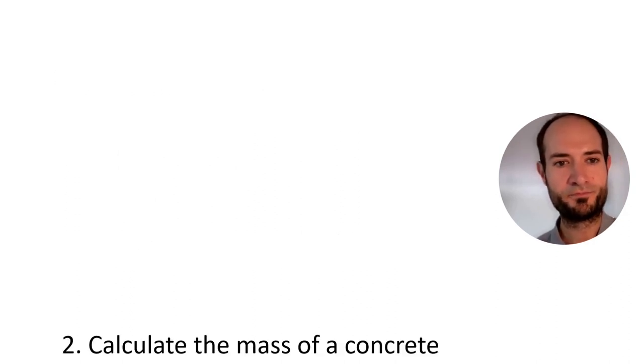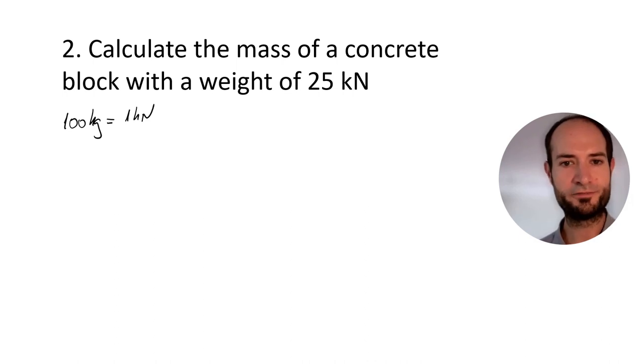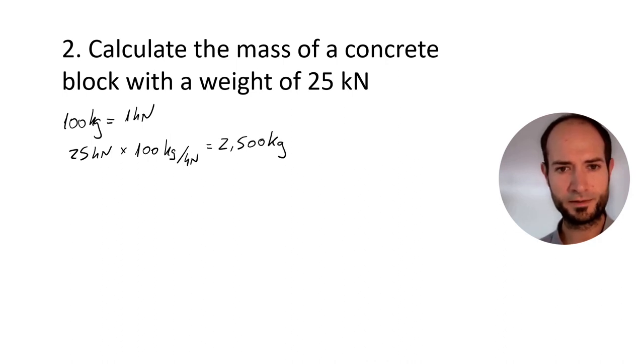Let's go to the second exercise. Calculate the mass of a concrete block with a weight of 25 kilonewtons. As before, we know that 100 kilograms equals 1 kilonewton. So 25 kilonewtons times 100 kilograms per kilonewton equals 2500 kilograms.